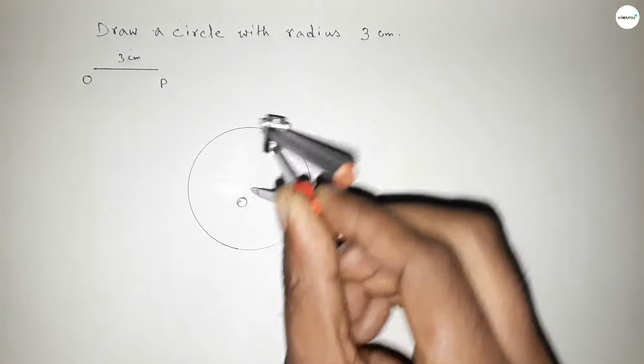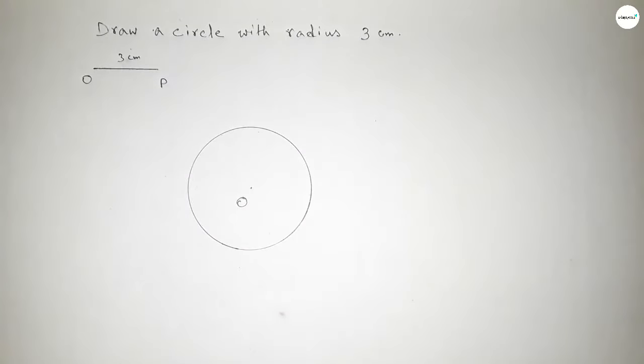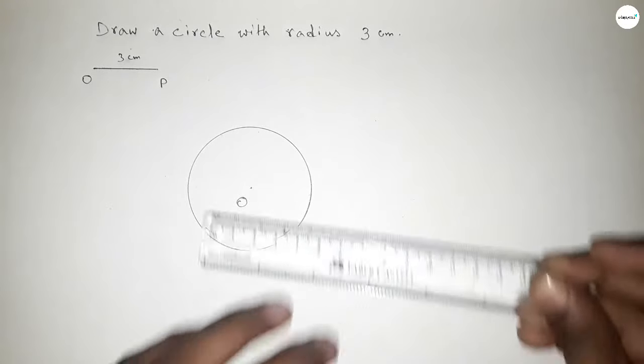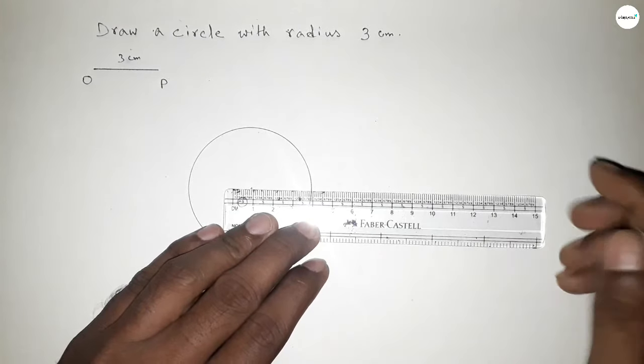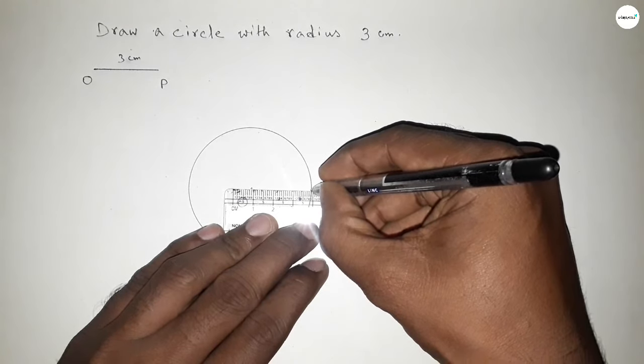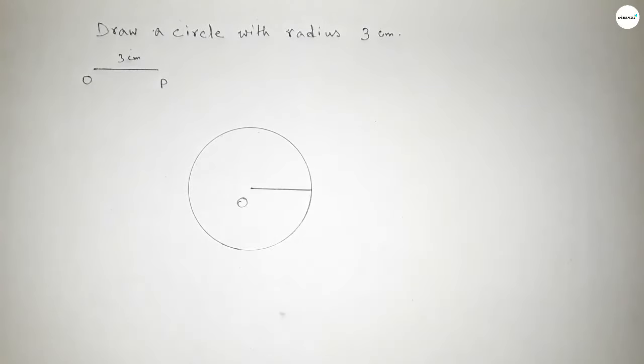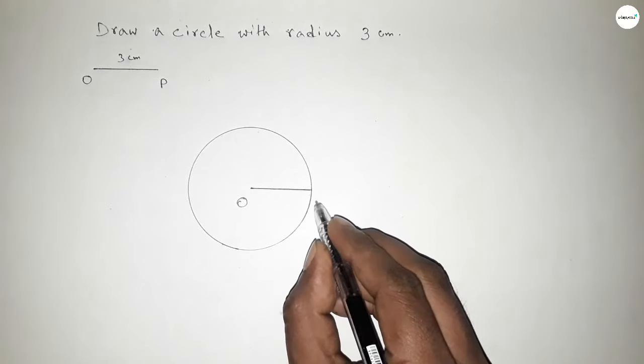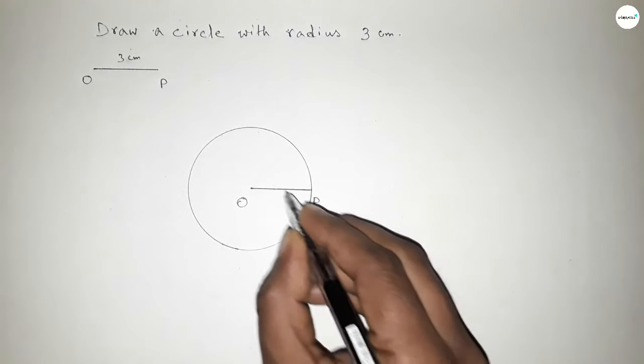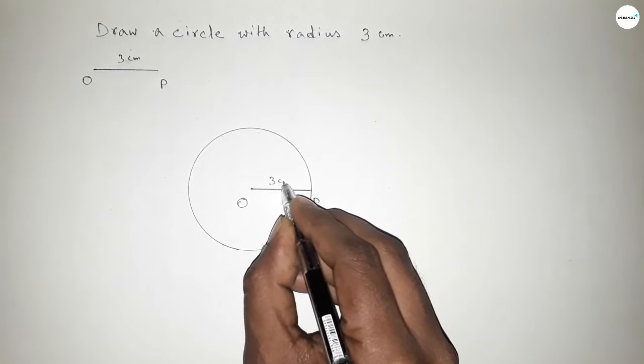Now joining the center O up to the perimeter to get the radius of this circle. So first joining this line to get the radius. Here this is P point, so OP equal to 3 centimeter. Therefore, radius OP equal to 3 centimeter.